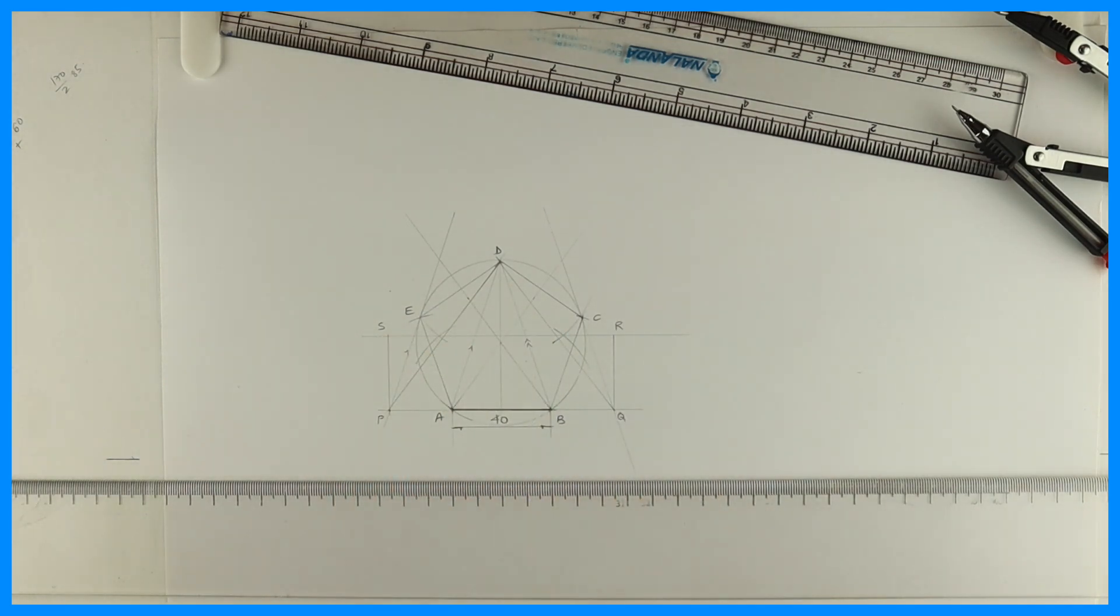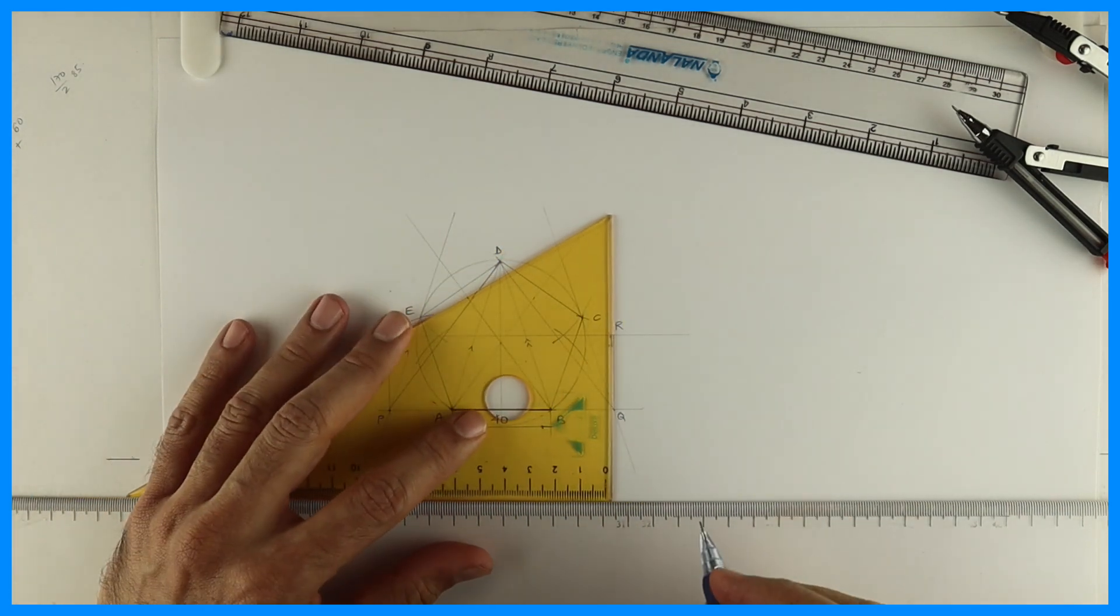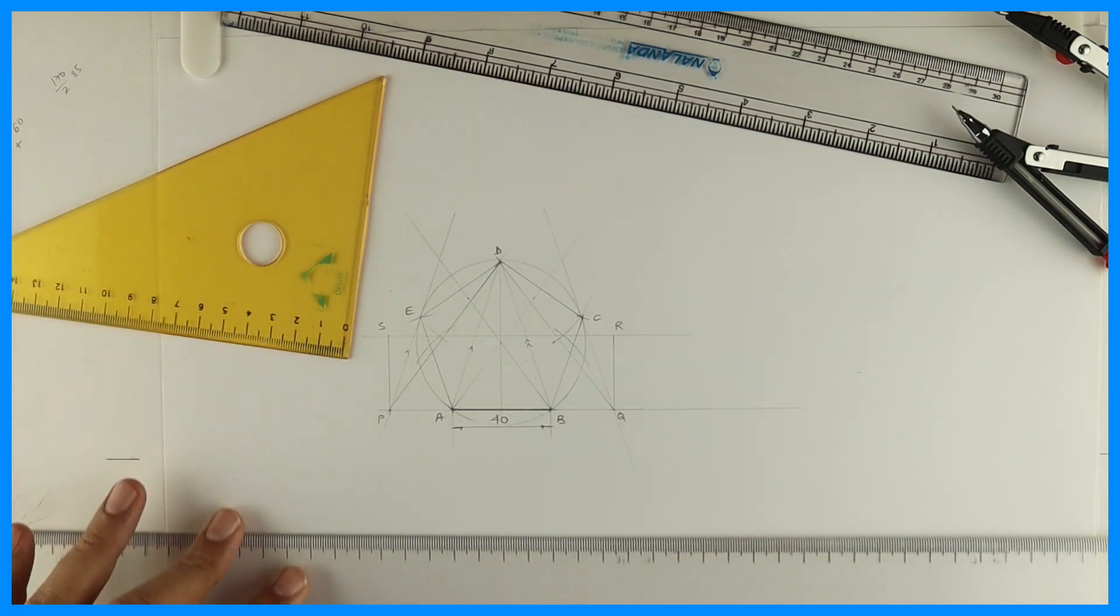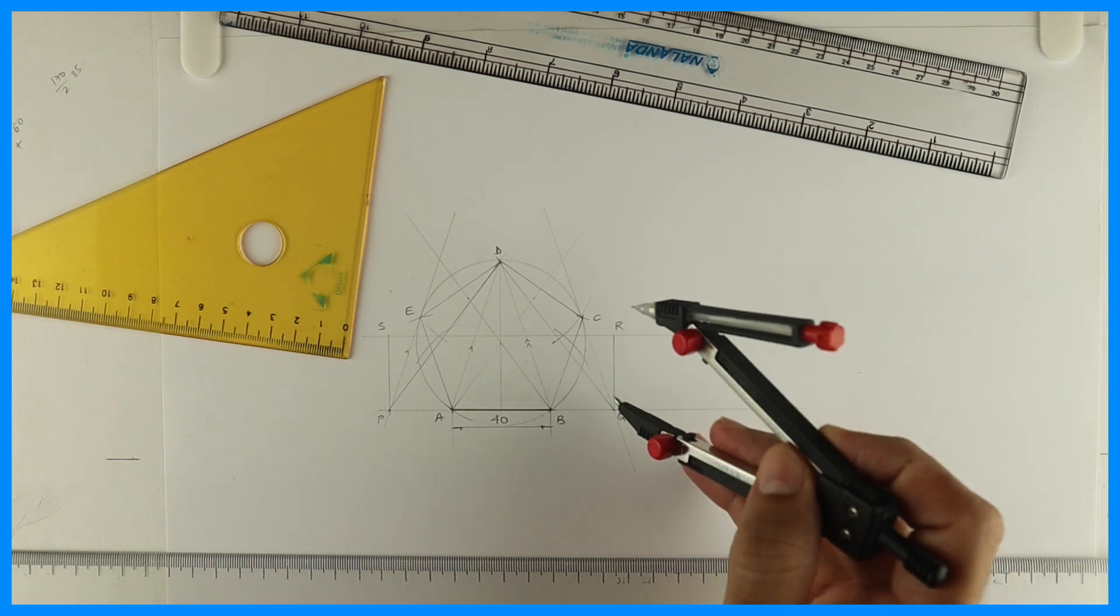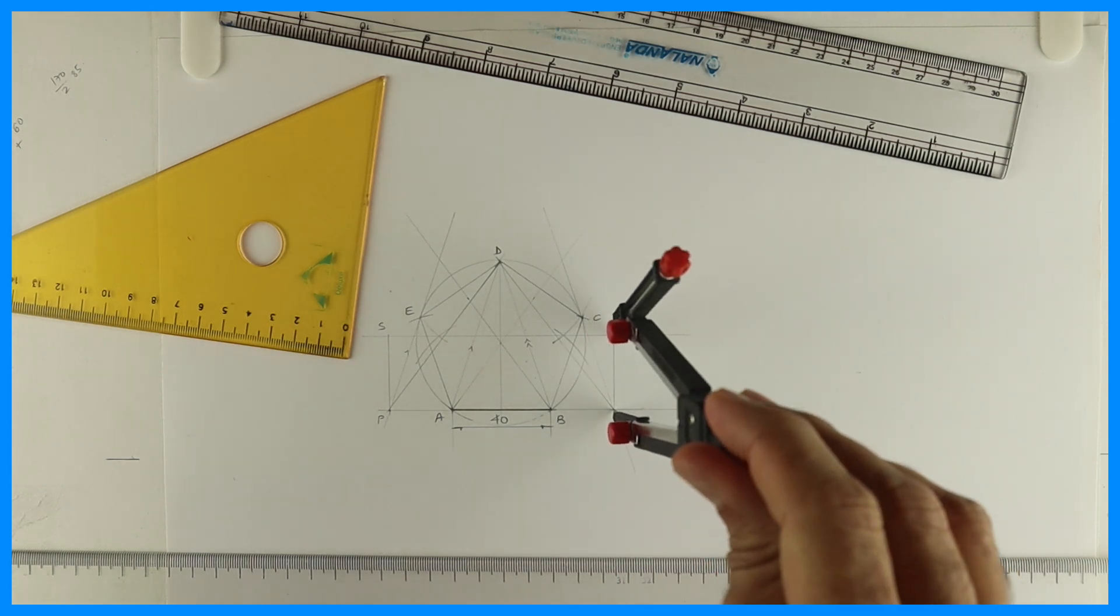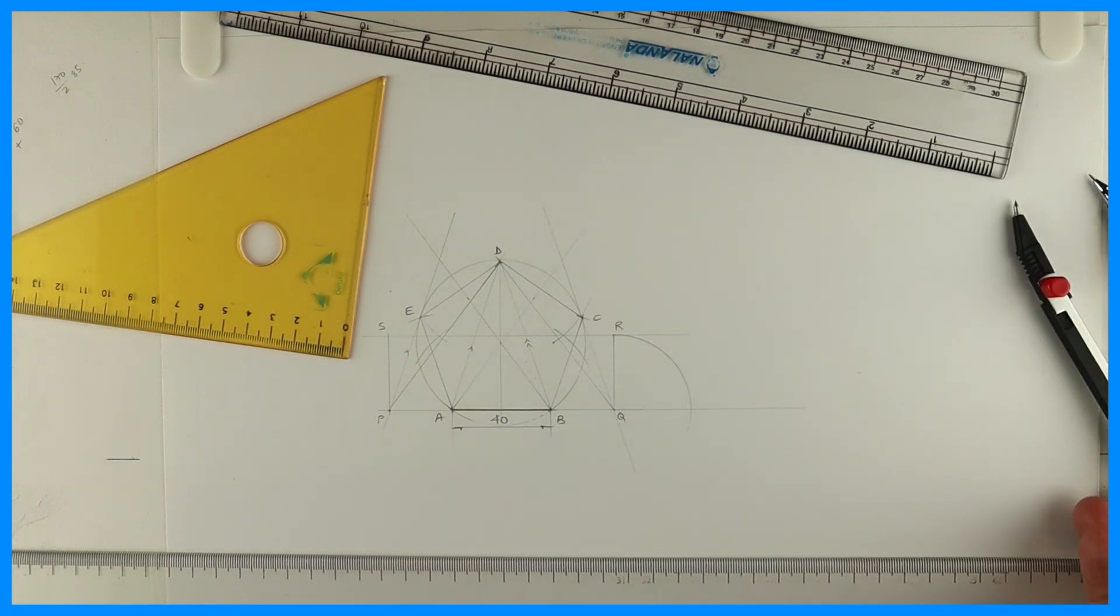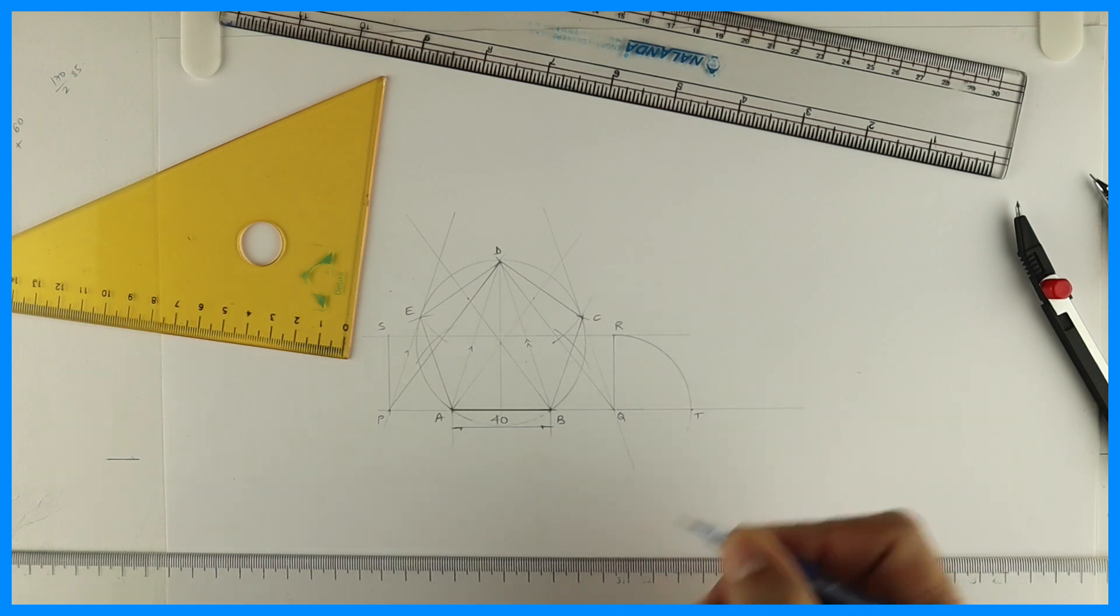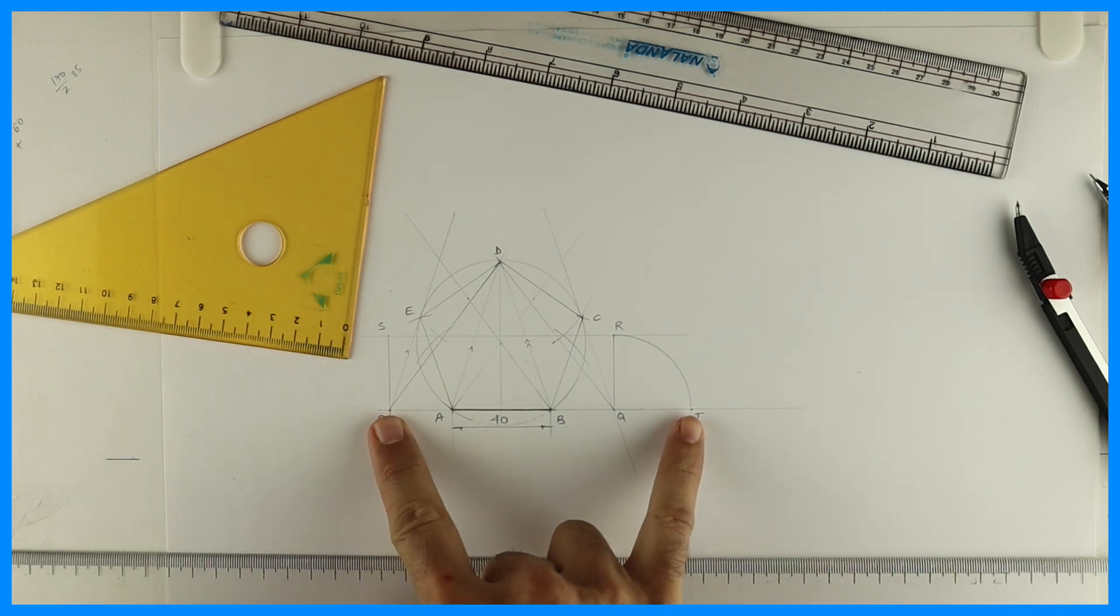Now after that what we need to do, from Q you extend line, take Q to R and rotate. Wherever it will cut you write as point T. Now bisect PT.